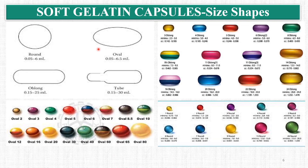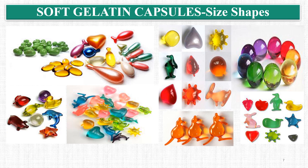Soft gelatin capsules are available in various sizes and shapes — mainly round, oval, oblong, and tube shapes — in different sizes. The fill weight varies as per the size, and shapes and sizes are selected based on the fill weight of the drug solution, suspension, or semi-solid preparation. Capsules can also be produced as bilayer — two gelatin layers giving a two-toned color appearance. Many shapes can be produced; for children, chewable capsules and meltable capsules are available as well.